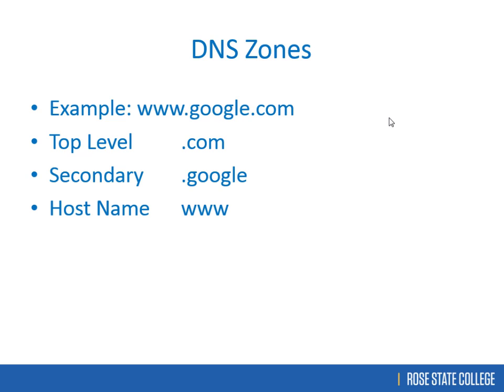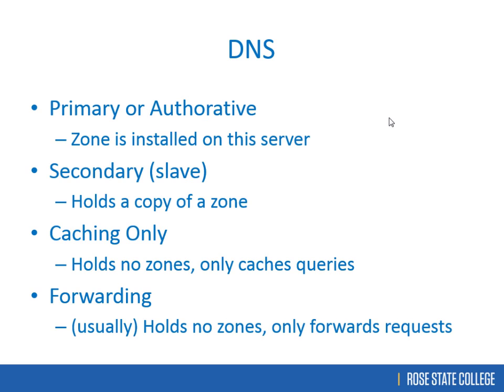With DNS you can have different server types. A primary or authoritative server holds the writable zone database. When I ran my ISP I was authoritative for intelgymnast.com. A secondary or slave server holds a read-only copy as a backup. If the primary goes offline, clients can query the secondary. Zone transfers between primary and secondary use serial numbers to track updates.